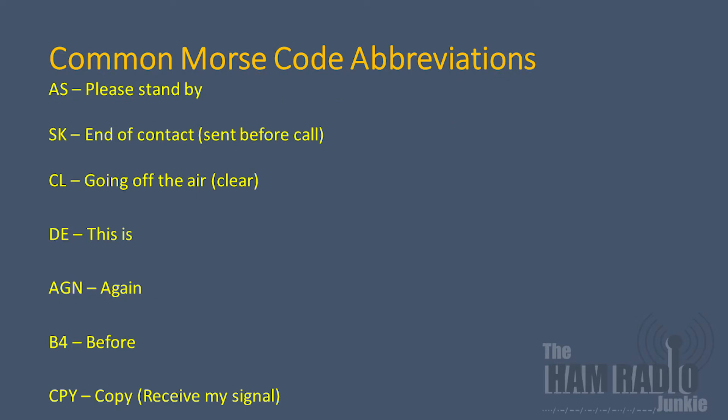We can see combinations of two and three letters to give the abbreviations as required. Some are fairly straightforward and don't take much explaining, such as A-G-N for 'again', or B and the number 4 for 'before'.